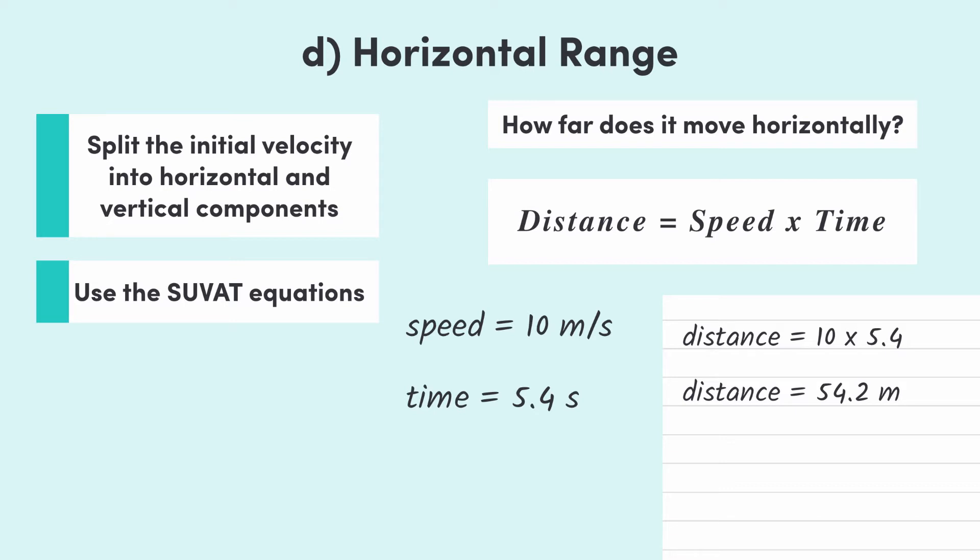Now, you might ask why I have 54.2 rather than 54. That's because the 5.4 seconds from part c was actually 5.418122, and so on. So, when we multiply this by 10, it rounds to 54.2.